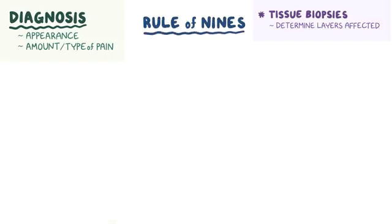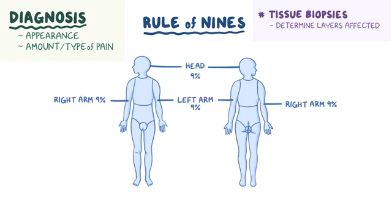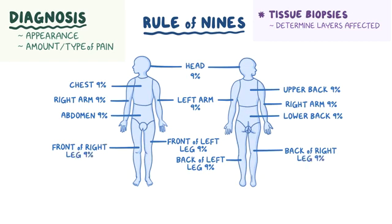The diagnosis of a burn is often based on the burn's appearance and the amount or type of pain, but sometimes tissue biopsies are obtained to accurately determine which layers are affected. In adults, the severity of burns is calculated using the rule of nines. This evaluates several distinct sections of the body's total surface area. Eleven sections each make up 9% of the body's surface area: the head, right arm, left arm, chest, abdomen, upper back, lower back, the front and back of the left leg, and the same for the right leg. A final section, the groin, accounts for the missing 1% of the body's surface area.